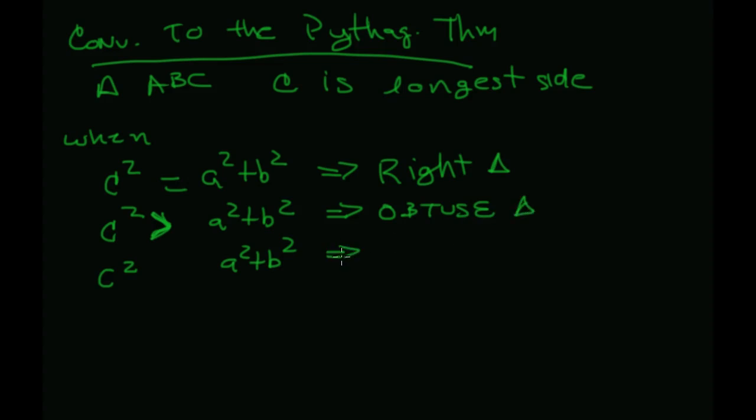And finally, if C squared is less than A squared plus B squared, we're moving to an acute triangle. So this is the converse of the Pythagorean theorem. It gives me an ability to know which equation or inequality will give me what type of triangle.